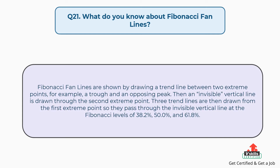Question number 21: What do you know about Fibonacci fan lines? Fibonacci fan lines are shown by drawing a trend line between two extreme points — for example, a trough and an opposing peak. Then an invisible vertical line is drawn through the second extreme point. Three trend lines are then drawn from the first extreme point so they pass through the invisible vertical line at the Fibonacci levels of 38.2%, 50.0%, and 61.8%.